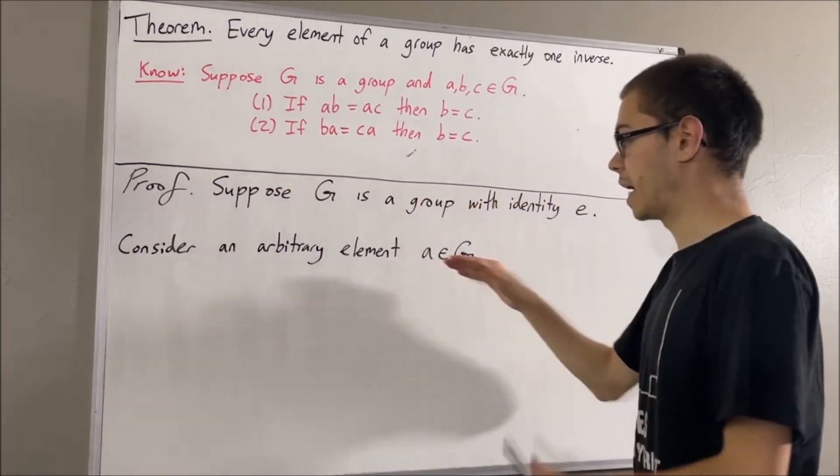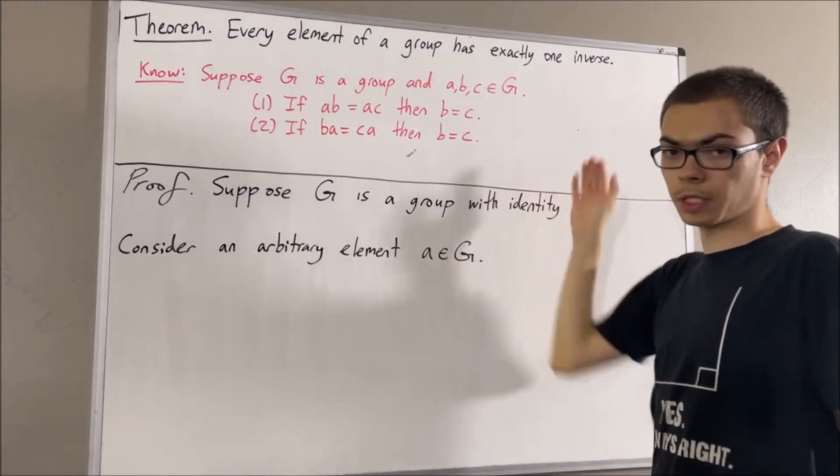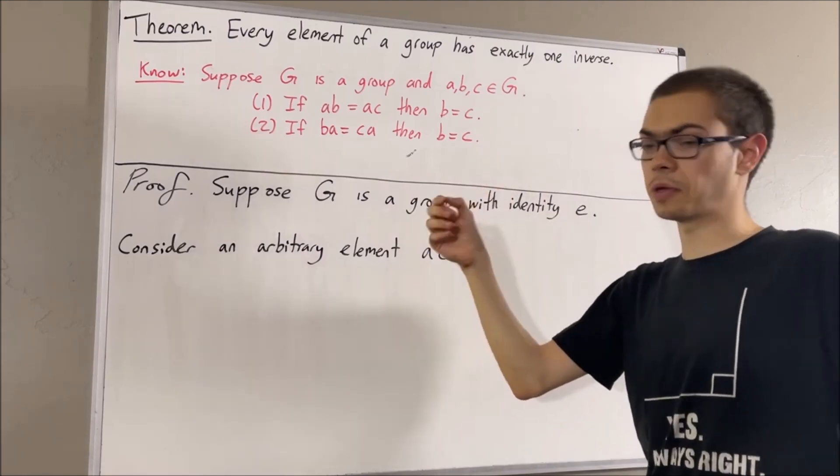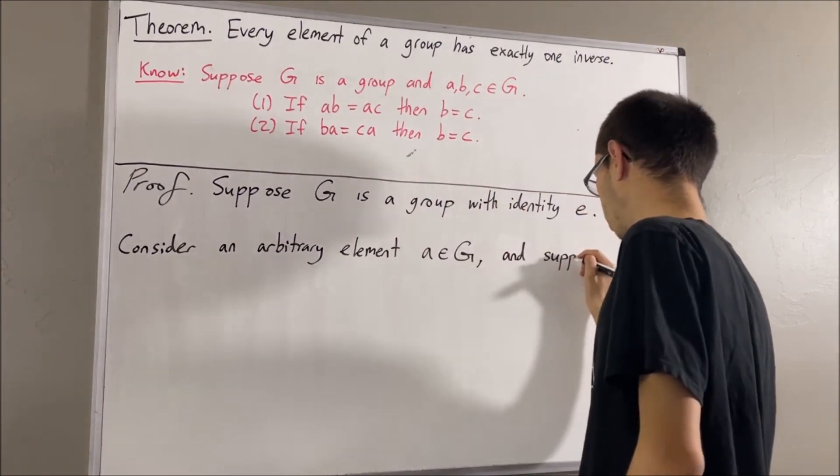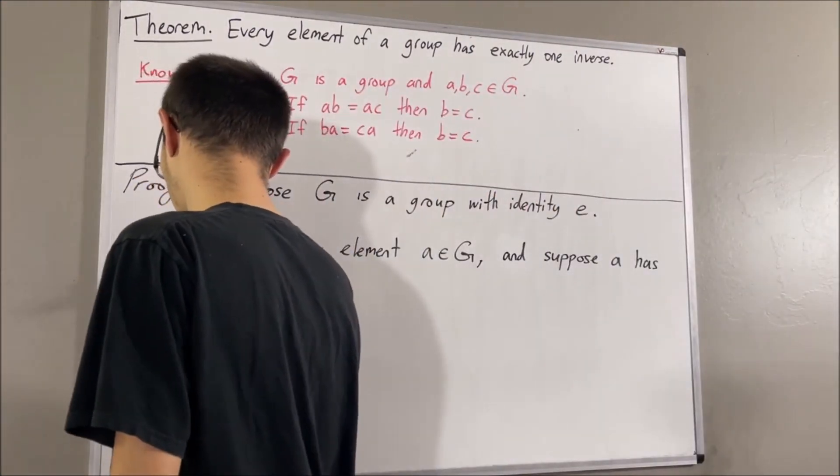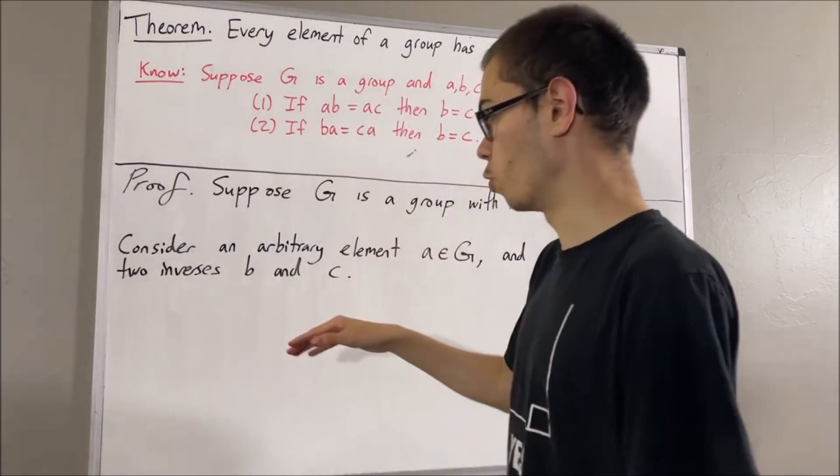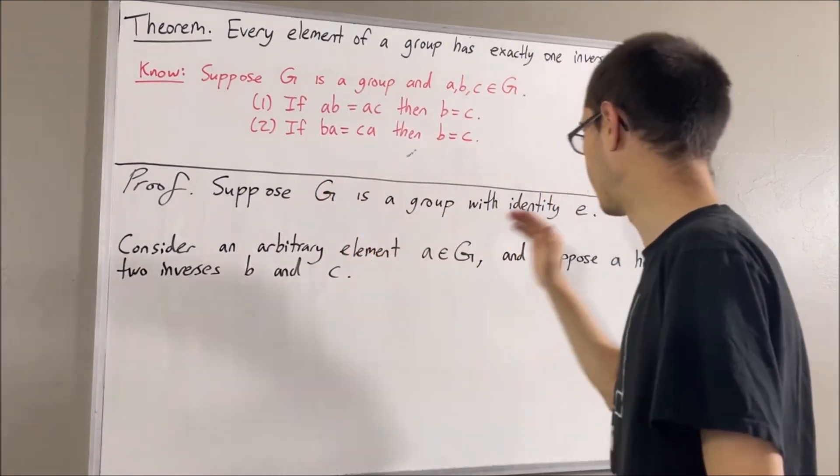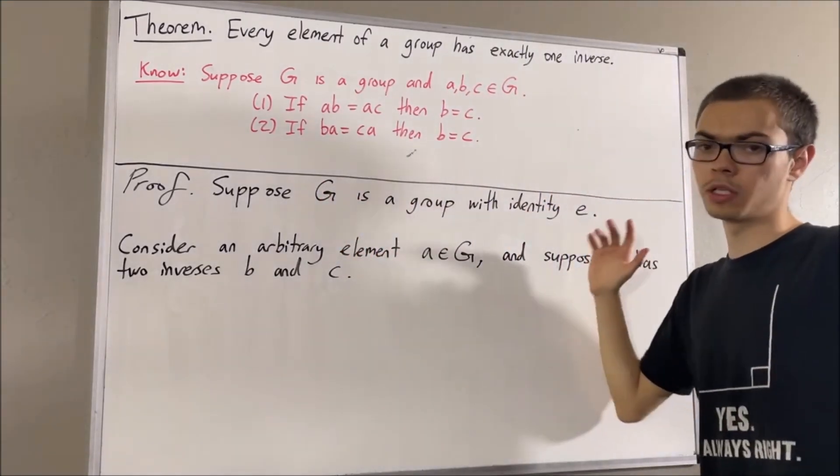And we want to show that a has exactly one inverse. Well, let's suppose that a has two inverses. I'll call them b and c. The whole goal is to prove that b equals c. That will prove that a has exactly one inverse.